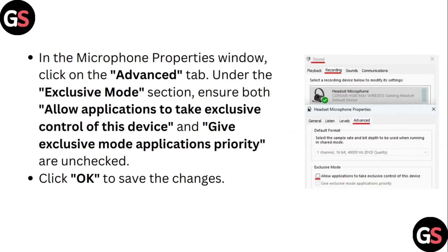In the Microphone Properties window, click on the Advanced tab. Under the Exclusive Mode section, ensure both 'Allow applications to take exclusive control of this device' and 'Give exclusive mode application priority' are unchecked. Click OK to save changes.